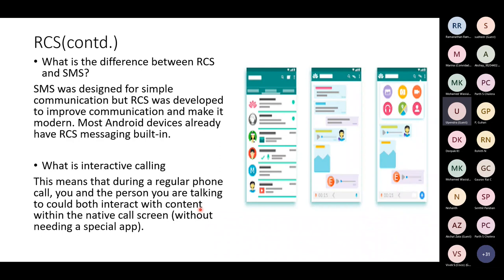What is the difference between RCS and SMS? SMS is plain text, whereas RCS gives you colorful images, reports, graphs, and all those things. Then after RCS, the concept of interactive calling came — this means that during a regular phone call you can interact with that person: sending messages, downloading things, making voice recordings and sending them. Because RCS is all IP-based, everything is IP packets. Slowly, interactive calling came into picture.